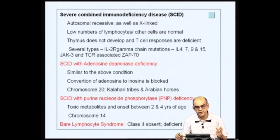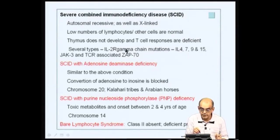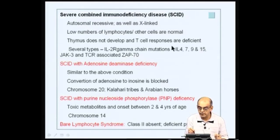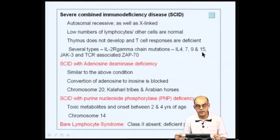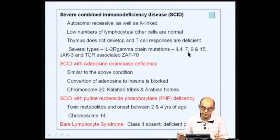The IL-2 receptor has three chains, and the gamma chain is shared between other lymphokines such as IL-4, IL-7, IL-9, and IL-15. A mutation in the IL-2 receptor gamma chain causes a deficiency in the function of IL-4, IL-7, IL-9, and IL-15, leading to several abnormalities in immune cell function, which we will look at when we discuss how these various cytokines function.